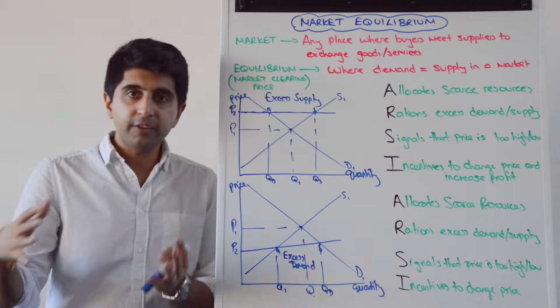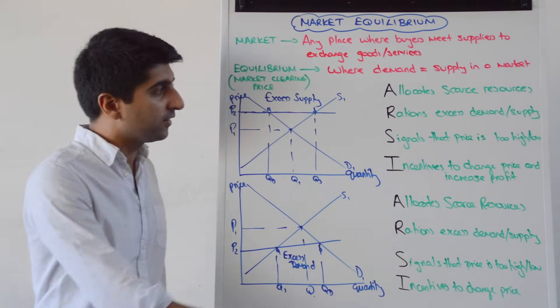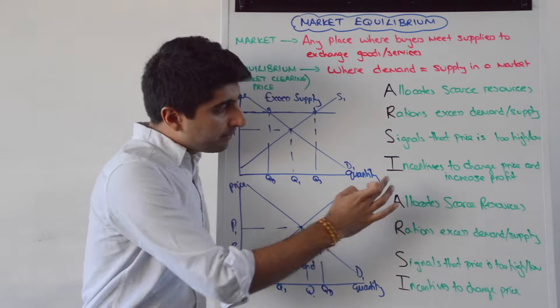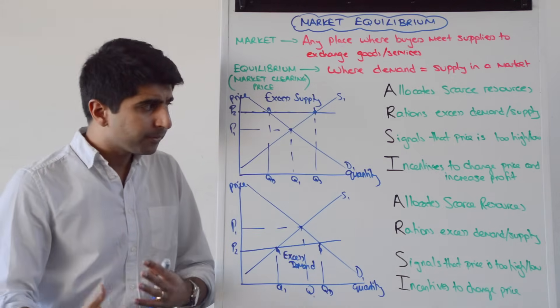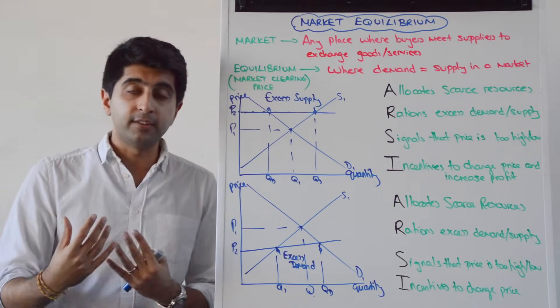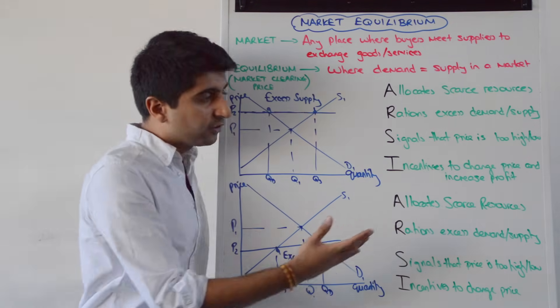How? Well, signals will be provided. So the price mechanism will send signals to producers that prices are wrong. Prices are either too high or too low. And also the market mechanism, the price mechanism will provide incentives to producers to change prices in order to make more profit. These are the four functions.